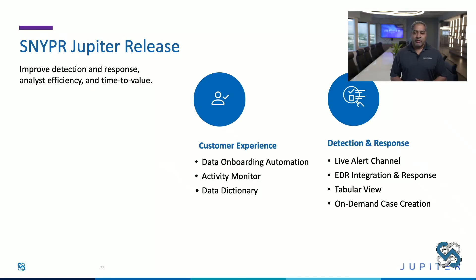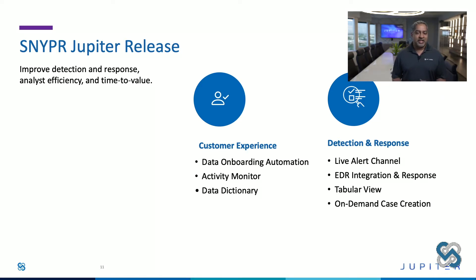Today I'm going to be covering a couple of key themes. We're going to be talking about the customer experience and new detection and response capabilities that we're delivering to our customers and partners. When we think about customer experience, we really think about a couple of key dimensions. The first is really about time to value — how do we make it easier for our customers to get to value faster? That's really through delivering a very intuitive modern UX and giving customers the tooling they need. Data onboarding automation is a great example of that.